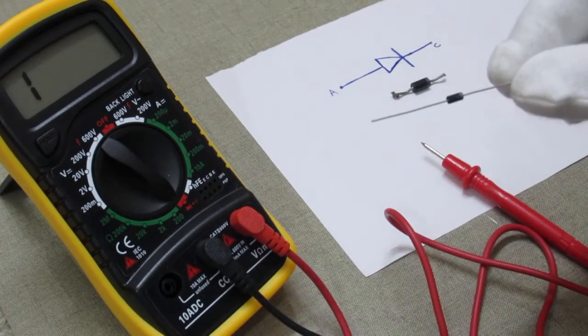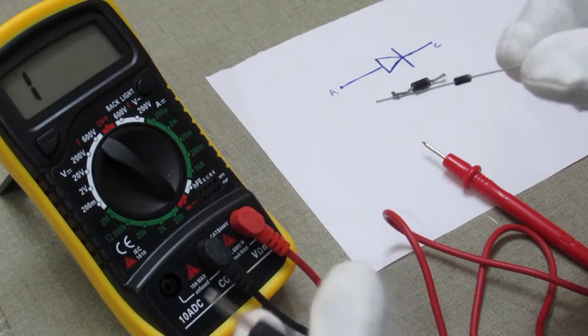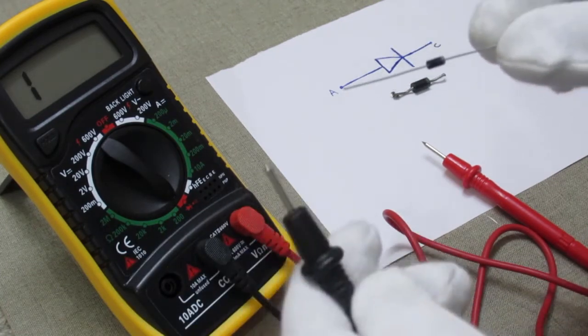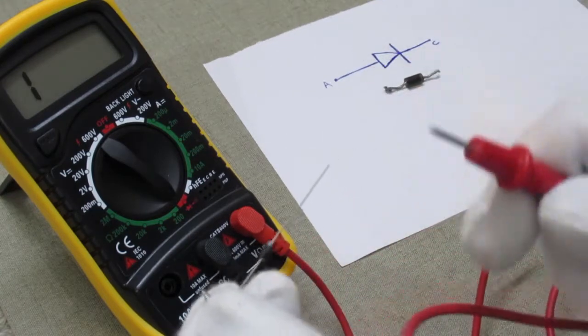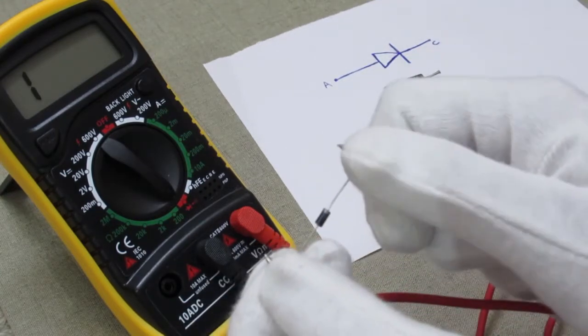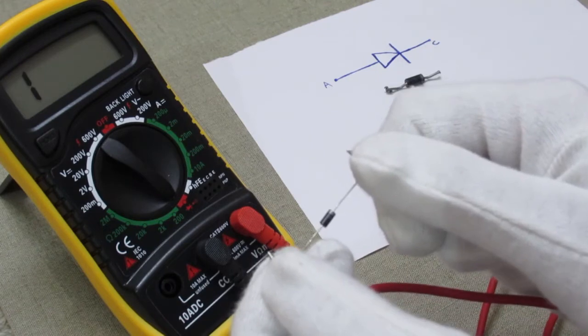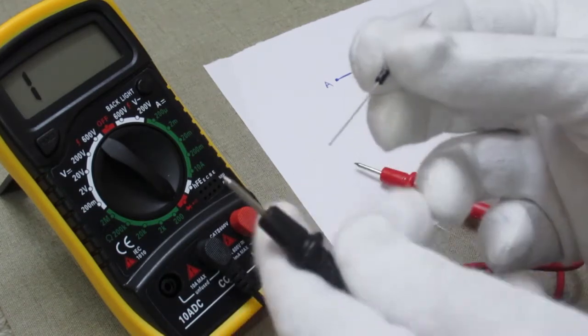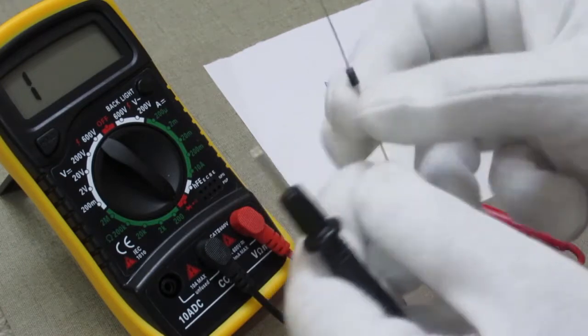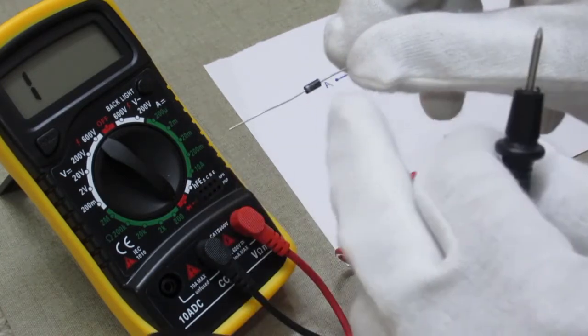Touch the black probe to anode and red probe to the cathode and see the multimeter LCD. There is nothing displaying on the LCD panel, there is no number. And now interchange the probes.